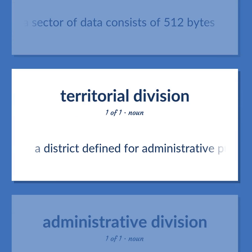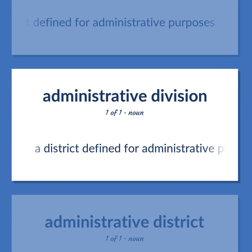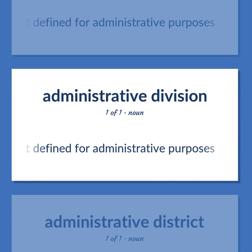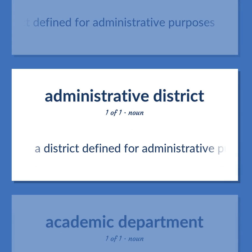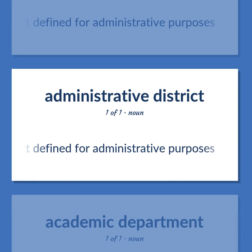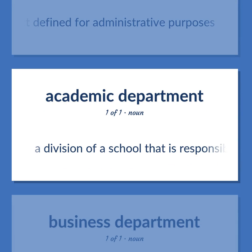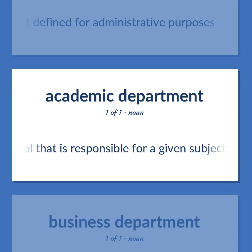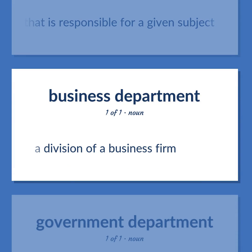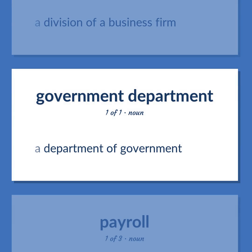Sector: a district defined for administrative purposes. Department: a division of a school that is responsible for a given subject. Also, a division of a business firm, or a department of government.